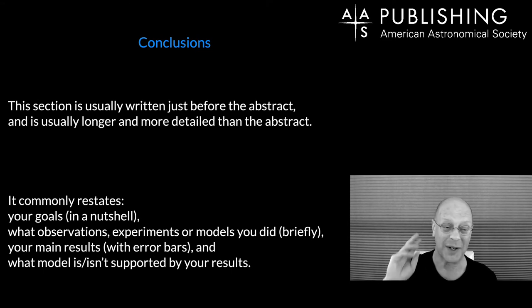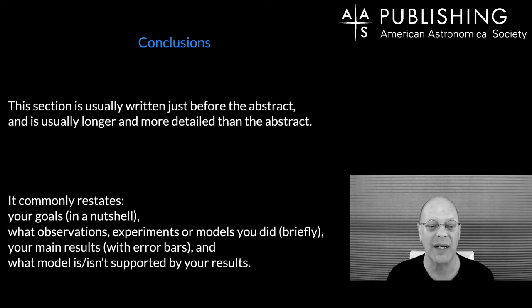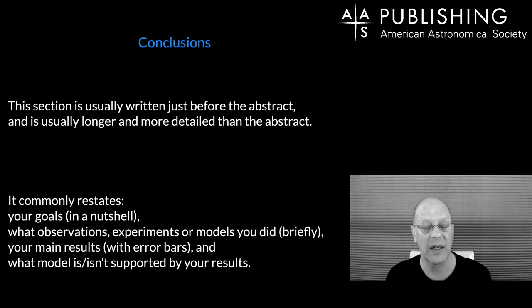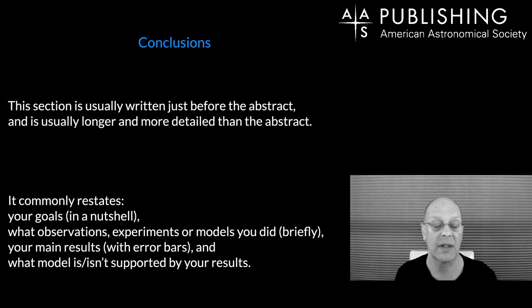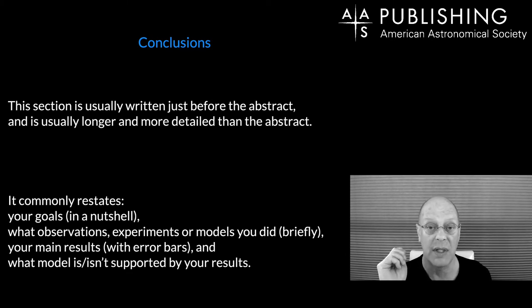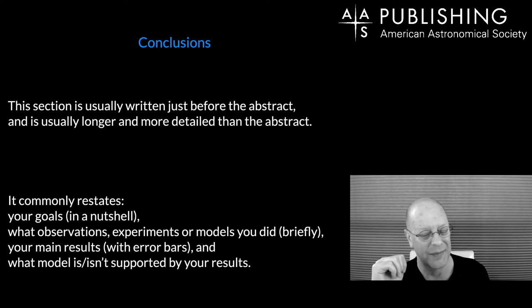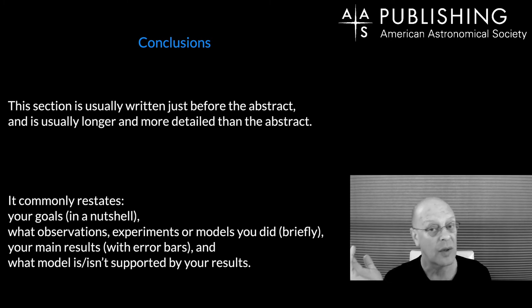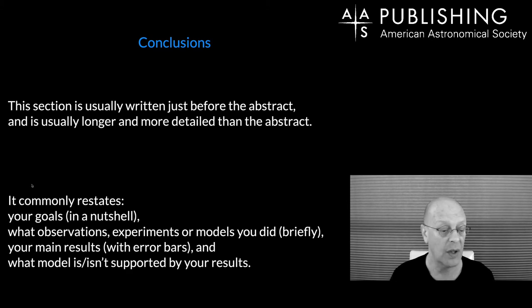The conclusion section is usually written just before the abstract because it's longer and more detailed. It commonly restates the big science goals in a nutshell, briefly describes what observations, experiments, or models you did, presents the main results with error bars and limitations, and states what model is or is not supported by your results.